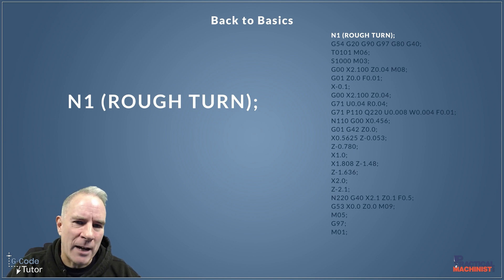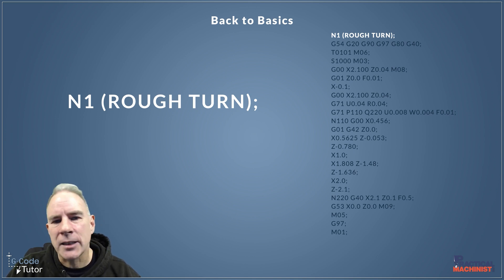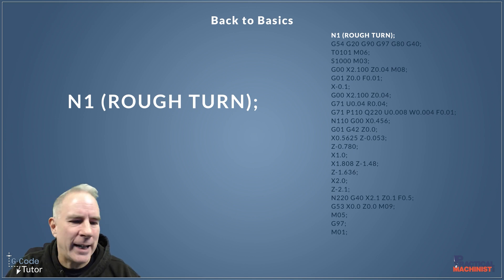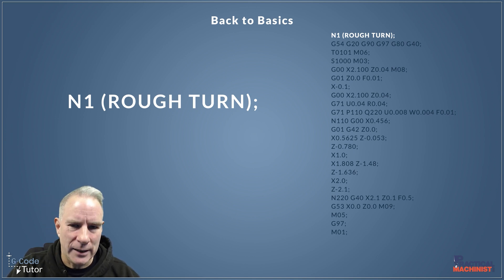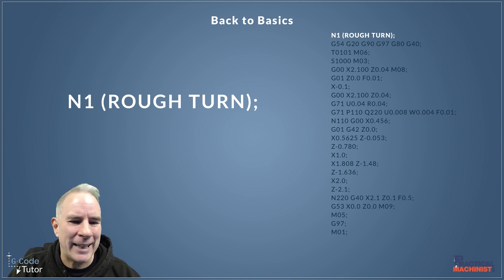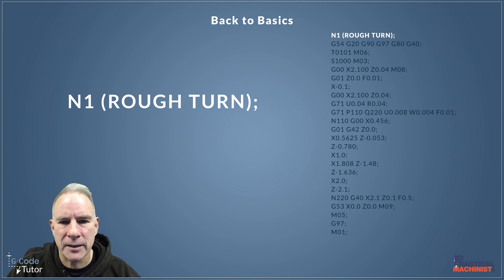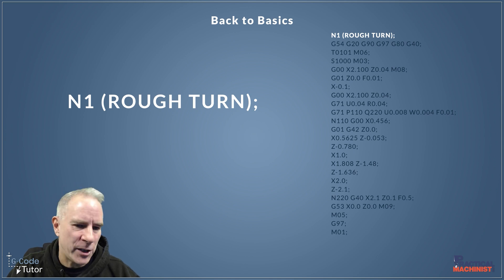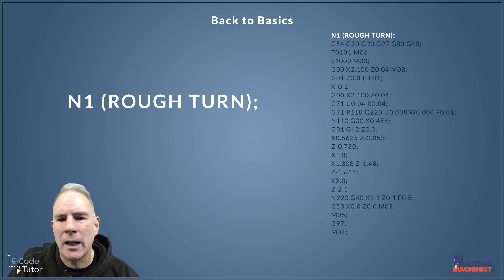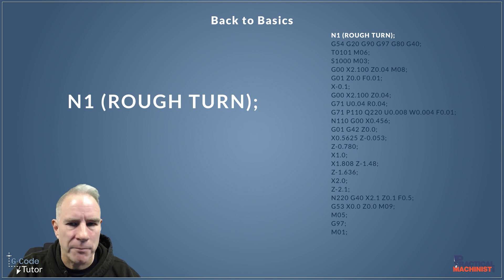After our N number there we've got an operator's note in brackets. In this case it's describing what the sequence is about — so it's letting us know it's a rough turn sequence. At the end of that we've got a semi-colon, which is the end of block character. We find this after every line of code; it tells the machine it's time to move on and read the next line.